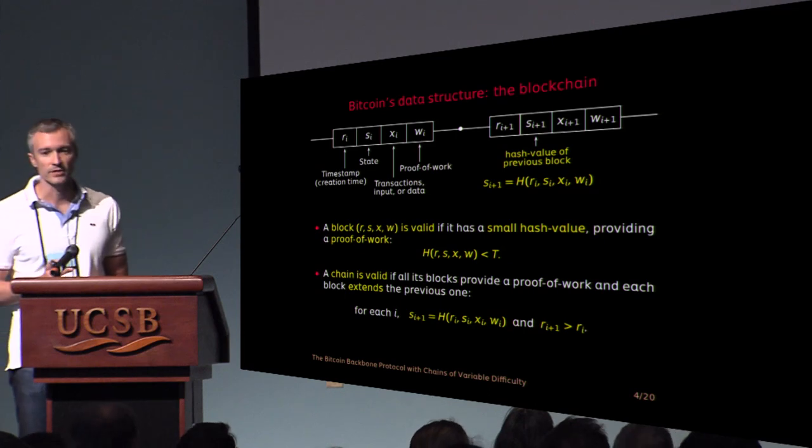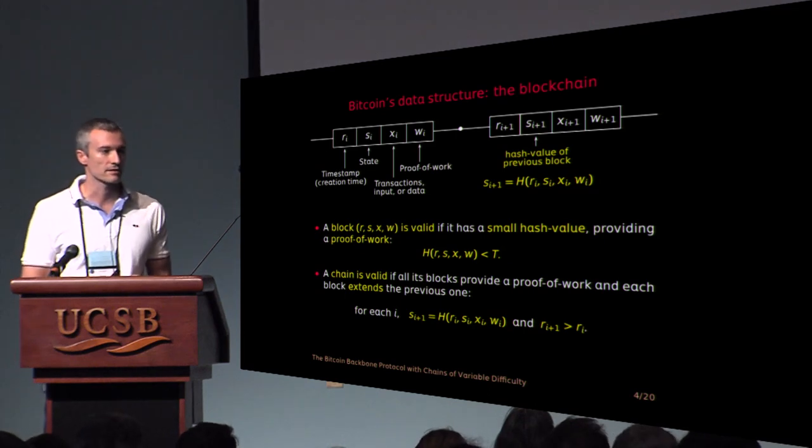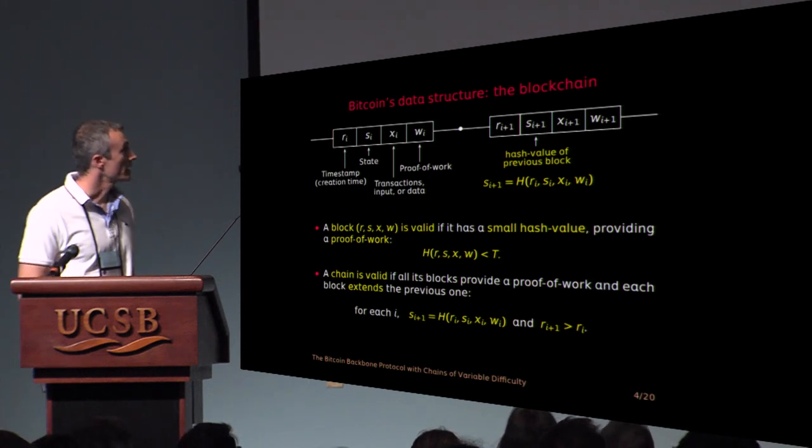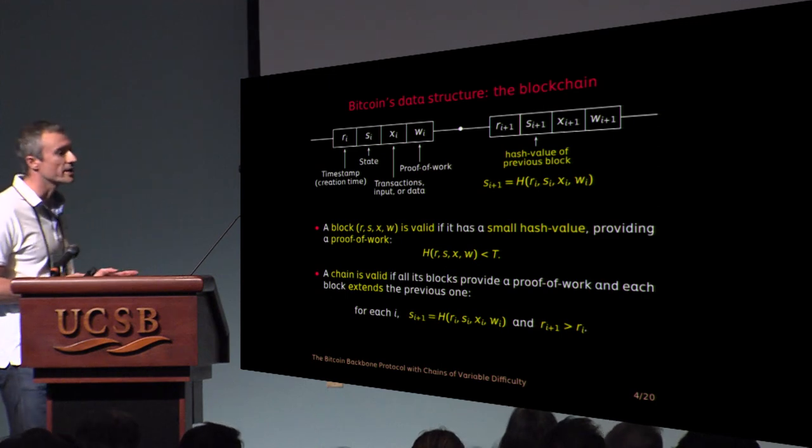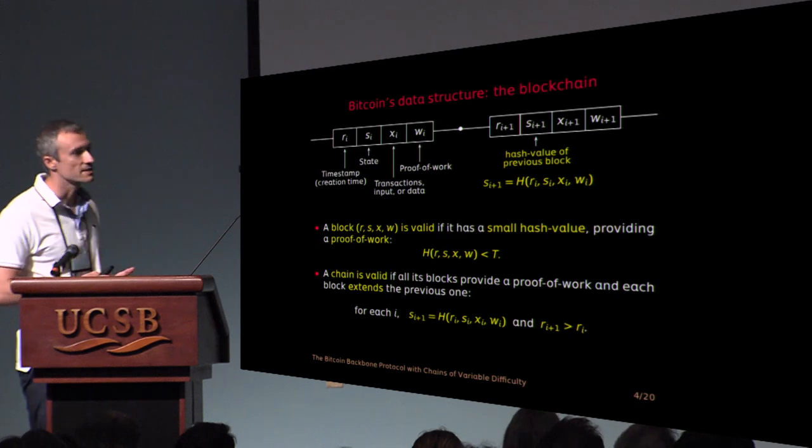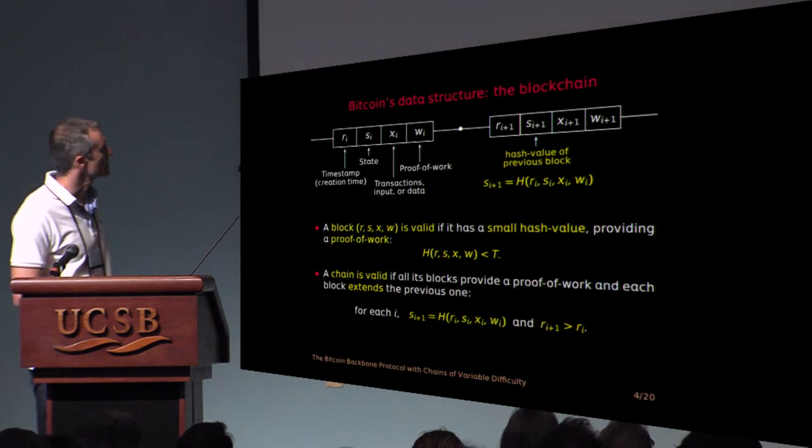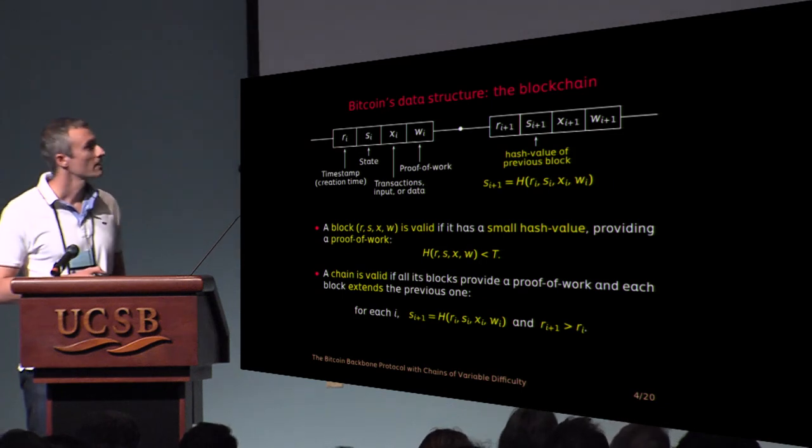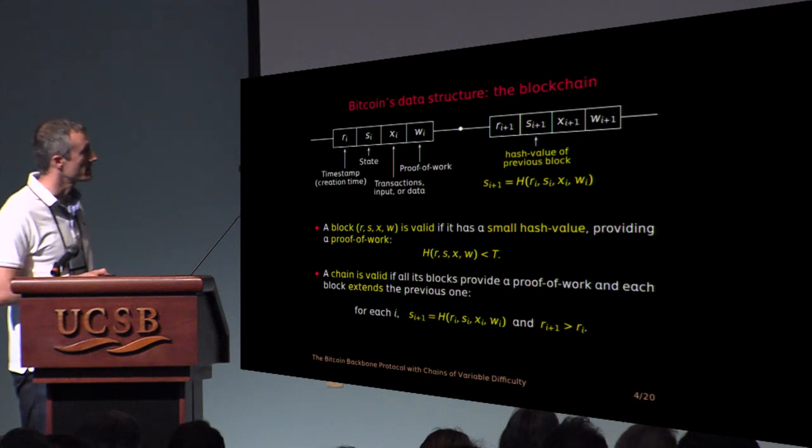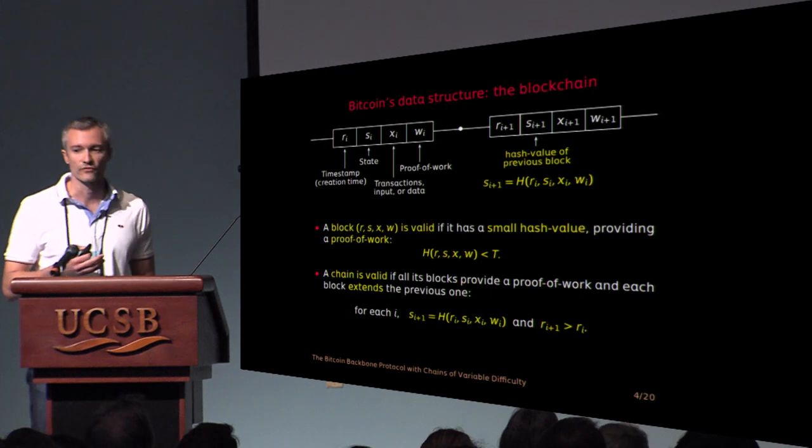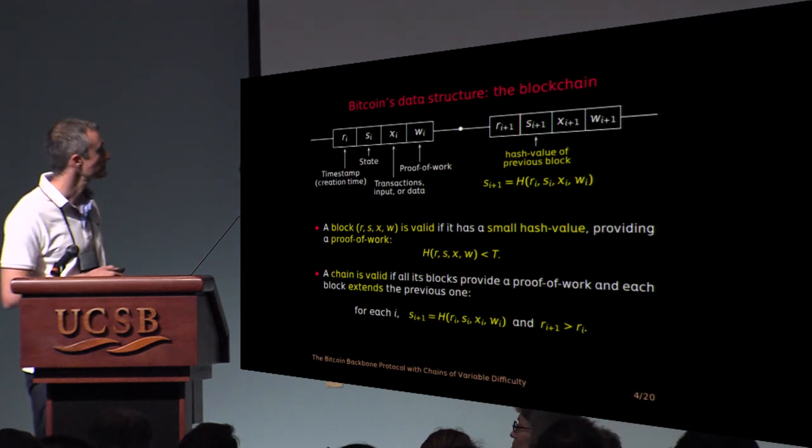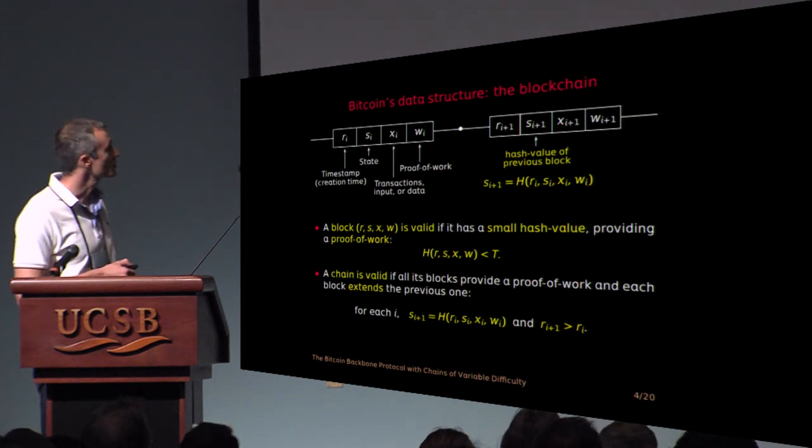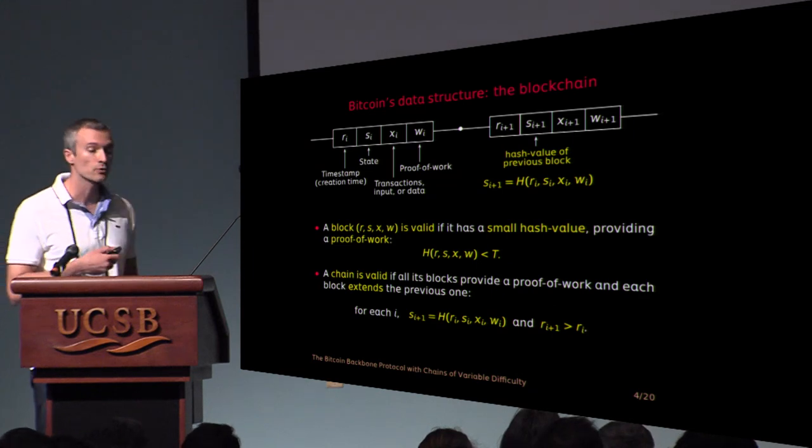We are going to study a distributed algorithm and the main object is the blockchain. This is the data structure that each party has in its private memory. We are going to focus on two ingredients of the blockchain. The first is that it is hard to generate a block. The hash value of a block has to be less than some target value t. And note here that by calibrating, by adjusting the target value t, you can adjust the hardness of the proof of work, the hardness of generating a block. Another ingredient is that for a block to extend the previous one, it has to contain its state, it has to contain its hash value.